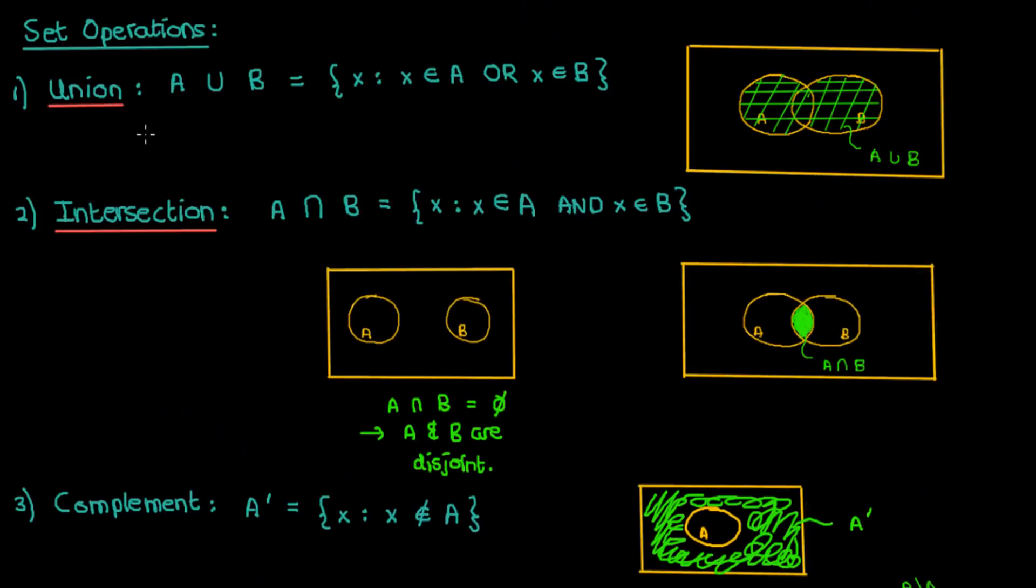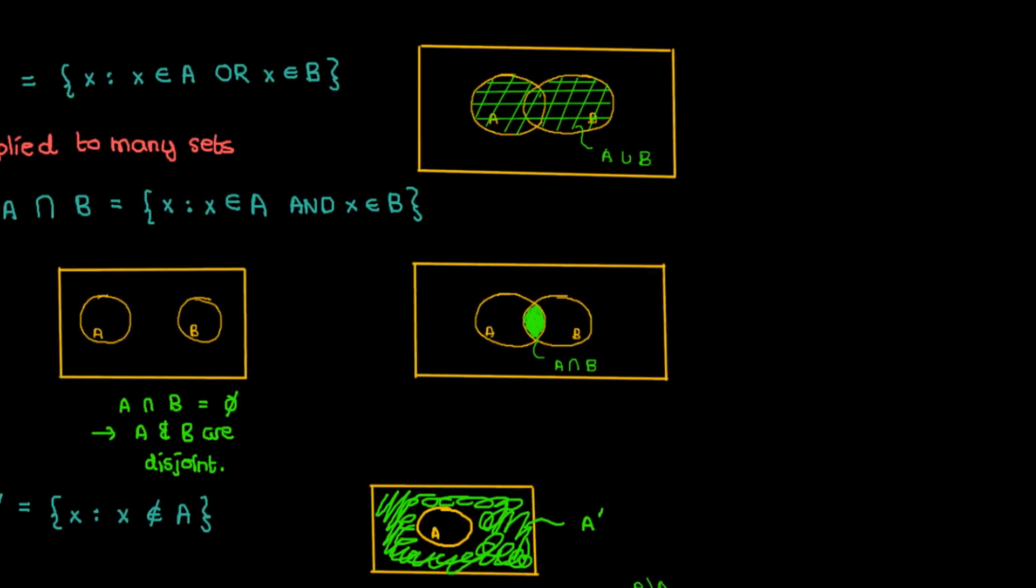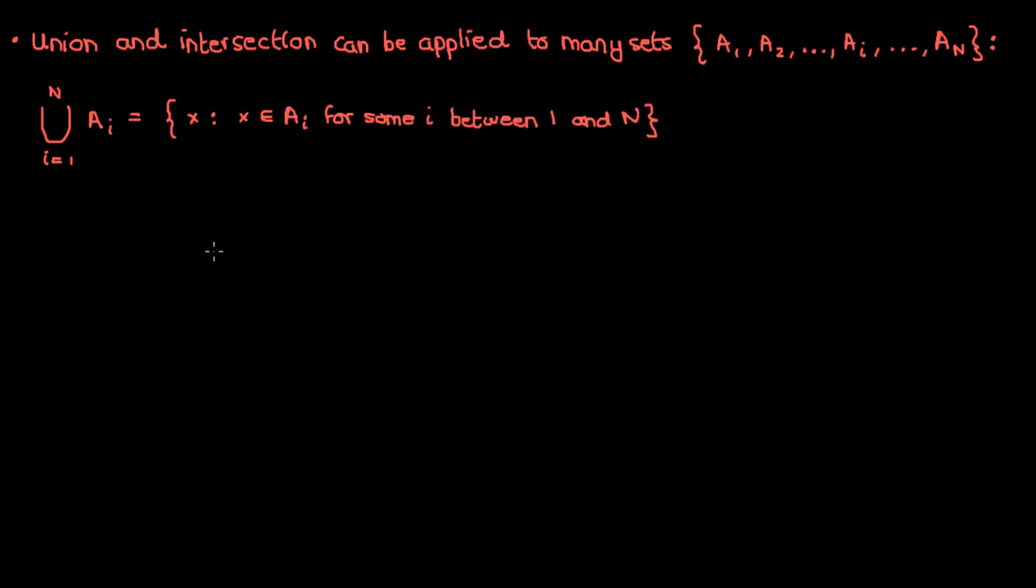Now the union and intersection operations that I just discussed aren't just restricted to two sets. You can also apply them to as many sets as you want. For example, the union of multiple sets AI, where i is a running index from 1 to n, can be written as the following. And this is going to turn out to be the set of elements that belong to at least one of the sets A sub i, where i varies from 1 to n.